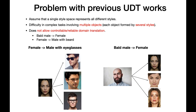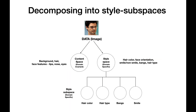Many of the unpaired domain translation methods consider a single style space for the translation. This is problematic in scenarios where we have multiple objects with different styles. Moreover, it doesn't allow controllable or reliable domain translation.